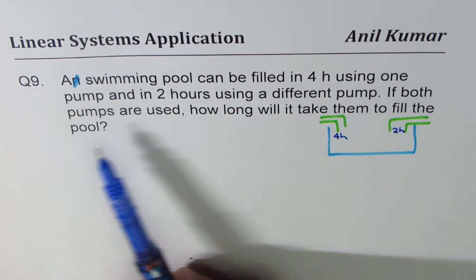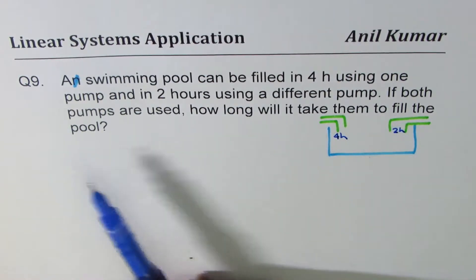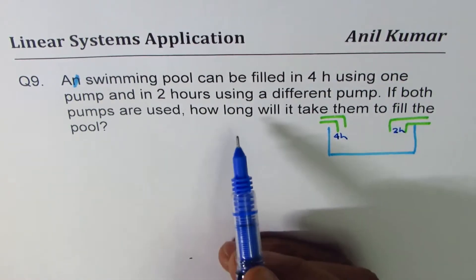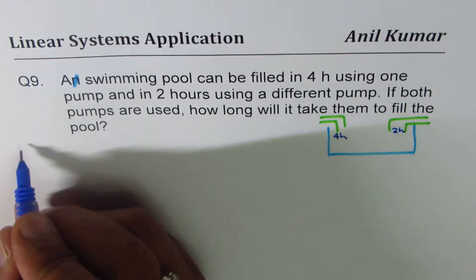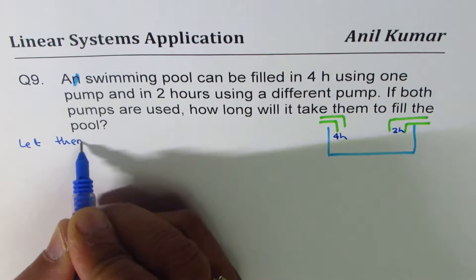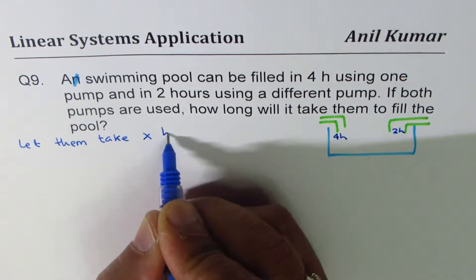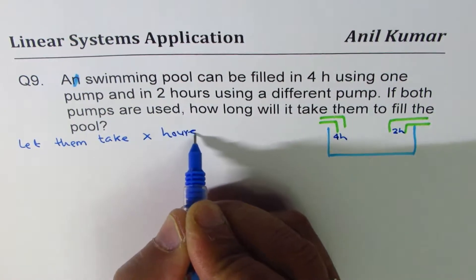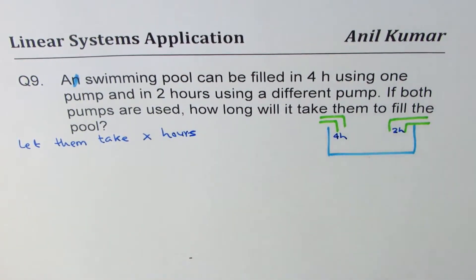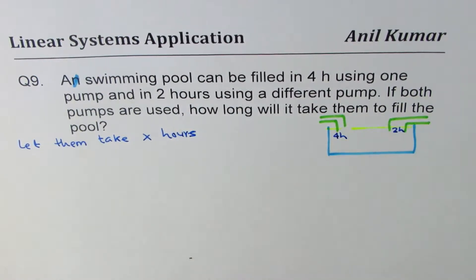Now it says, if both pumps are used, how long will it take them to fill? Well, let us say, we don't know. So we'll define a variable. So let them take X hours. Is it okay? X hours. Now in X hours, the whole pool will be filled. So it will be filled up to the top. Correct.